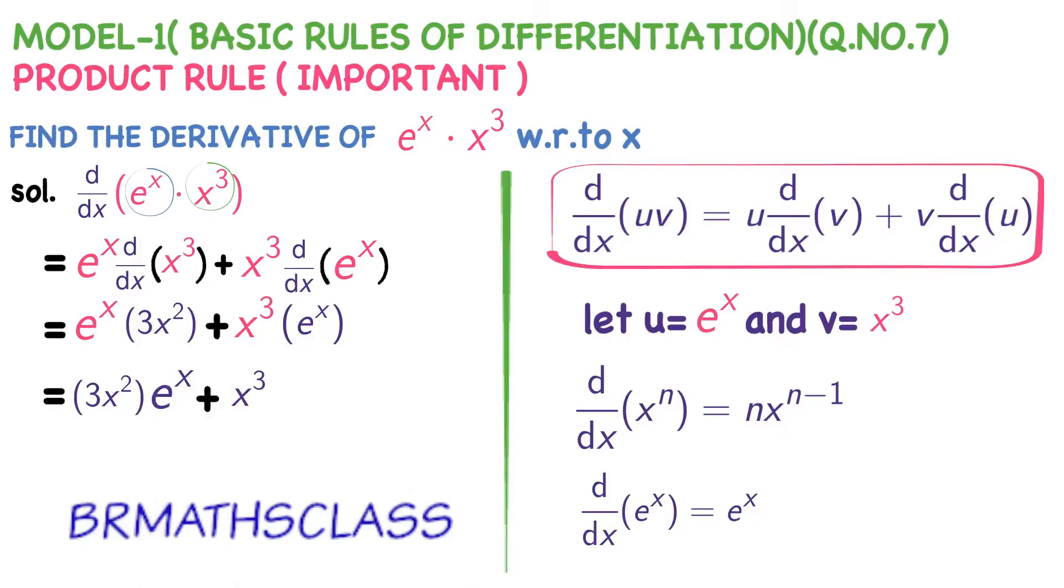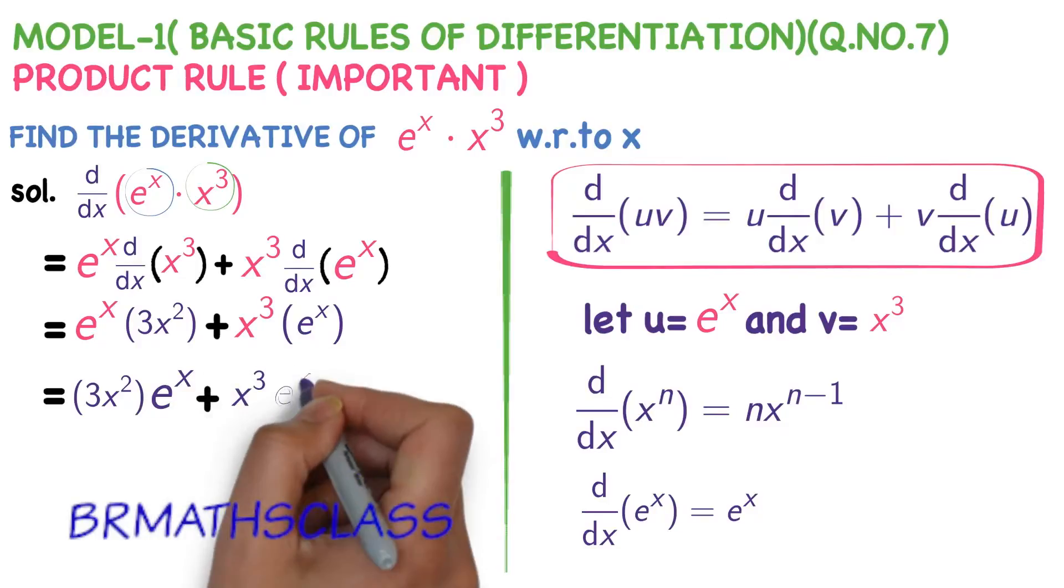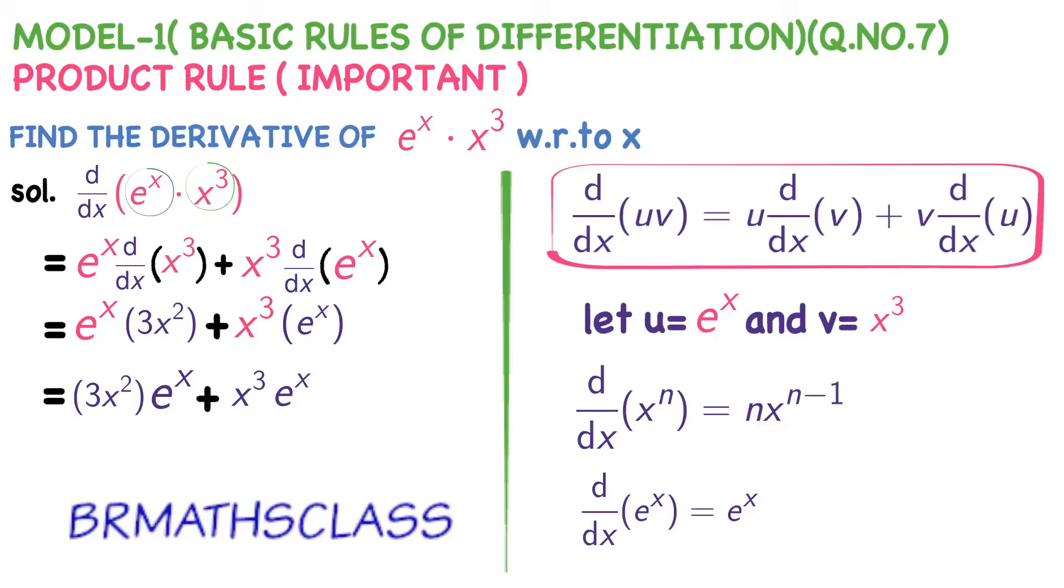3x square into e power x plus x cube into e power x. That's it. It is actually very easy problem. And most important problem also. So, product rule we will use very frequently in this chapter. Please, be thorough with this formula. Derivative of uv is u into derivative of v plus v into derivative of u.